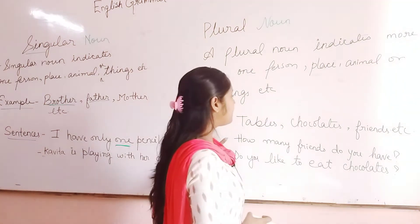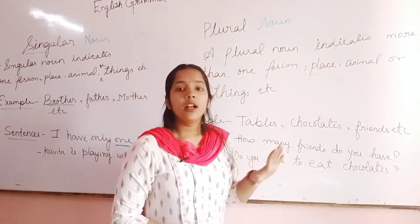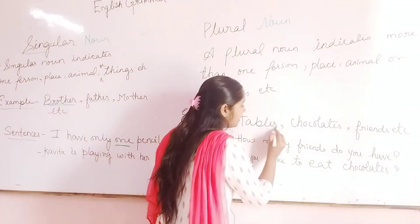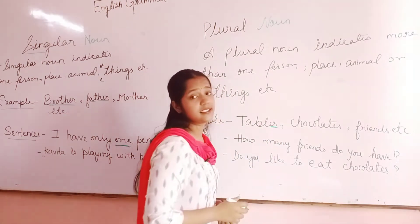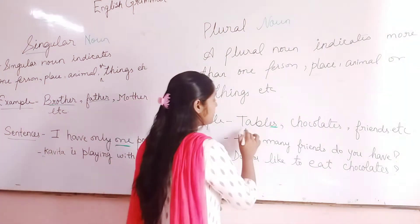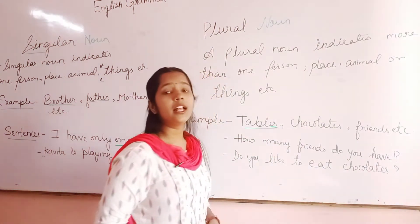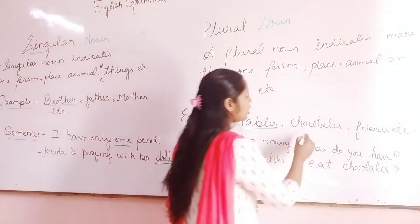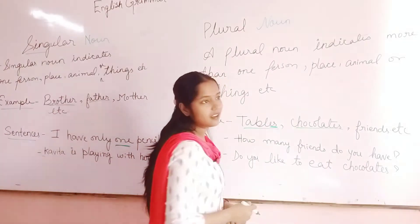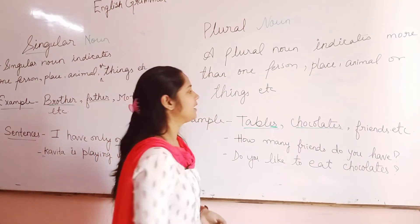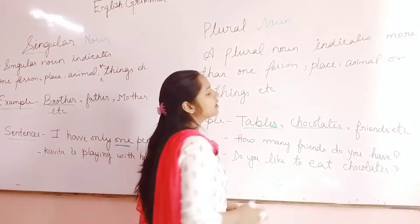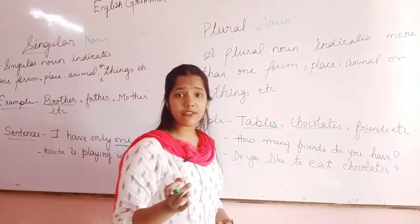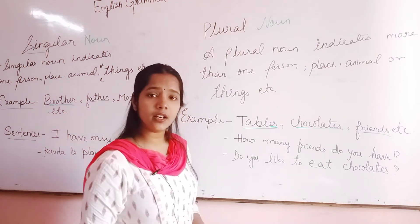The example is 'tables.' If we are writing 'tables,' we are adding 'es' at the end. It means there are lots of tables, so it comes under plural noun. Chocolates — do you like chocolates? Everyone should like chocolates! So 'chocolates' comes under plural noun. Friends — you have so many friends, so 'friends' comes under plural noun.